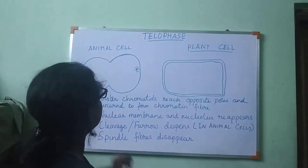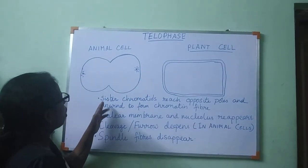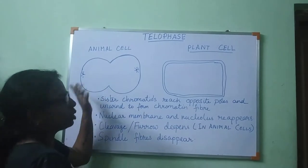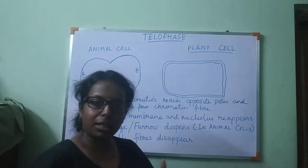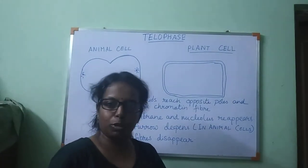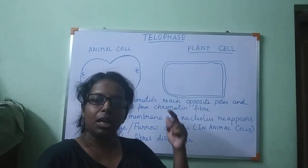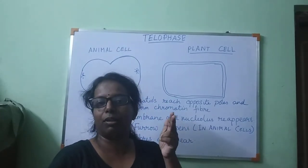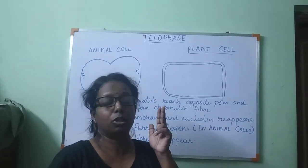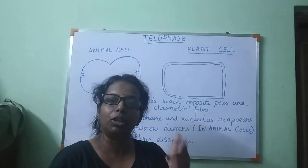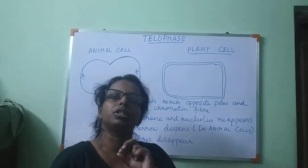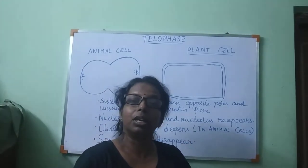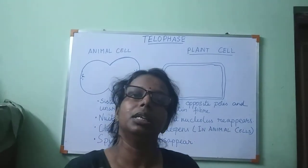In telophase, we already know that the sister chromatids have reached the opposite poles. When the sister chromatids have reached the opposite poles, the nuclear membrane and nucleolus, which disappeared in the first phase — prophase — reappear in telophase.